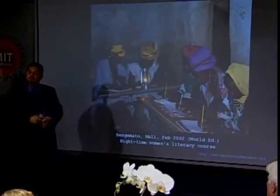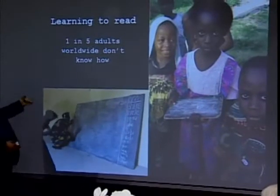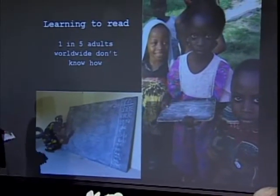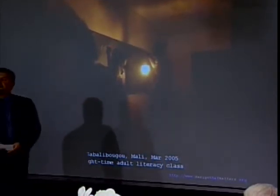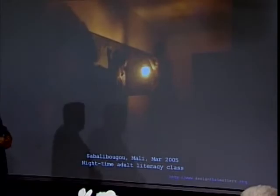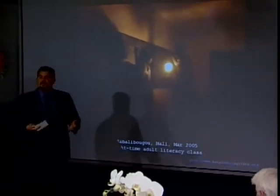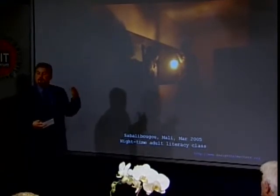Most of the light in this picture came from the camera flash. All of these women are sharing a single lantern, and there are another 30 students in this class sitting in the dark. Maybe this worked for Abe Lincoln, but as a way to teach 30 adults, this is not as efficient as it could be.